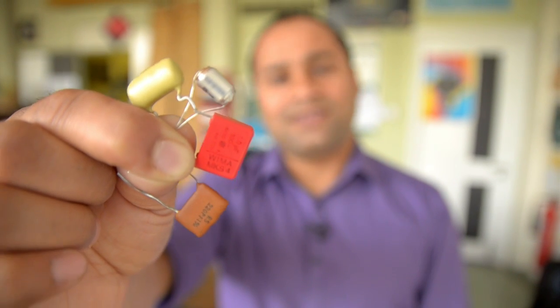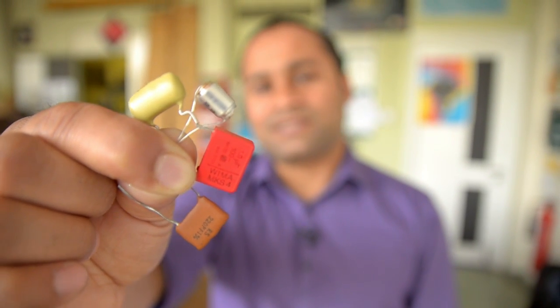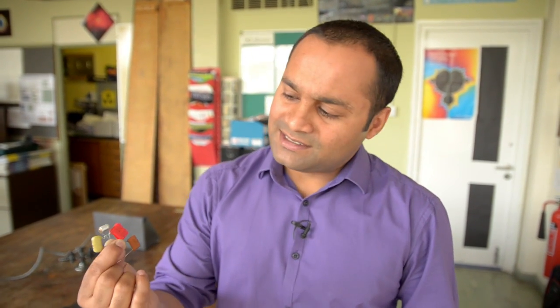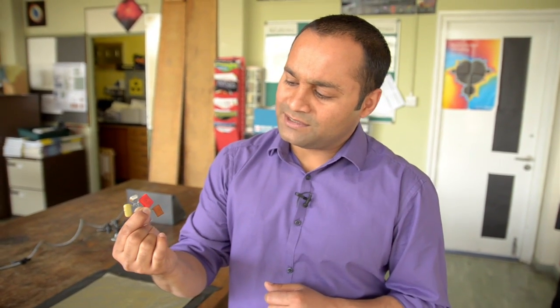These are capacitors, and they're used in electrical circuits to store charge. They're crucial components in things like defibrillators, computers, and mobile phones. And as you can see, they come in a variety of shapes and sizes.